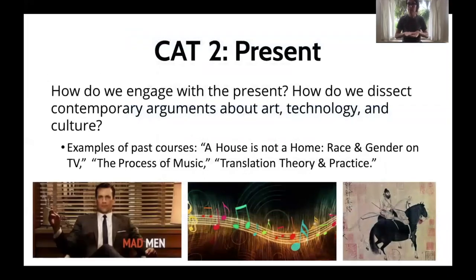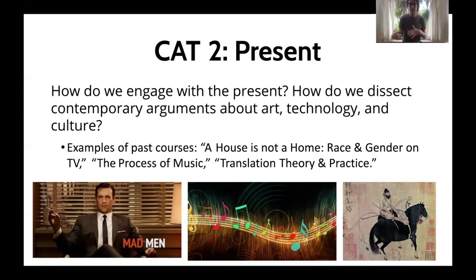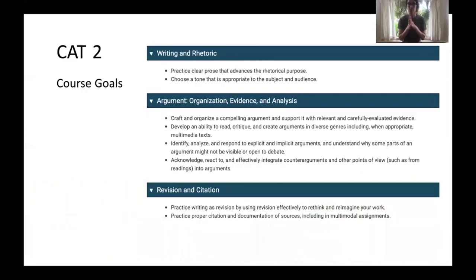CAT 2 classes are set in the present. We're moving from past to present, thinking about how we use that information learned in the fall to engage with the present — how do we dissect contemporary arguments about art, technology, and culture? How do we develop media literacy for the present moment that helps us create distance and think critically about what we see happening in the world around us?